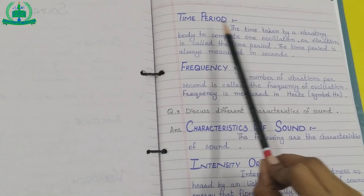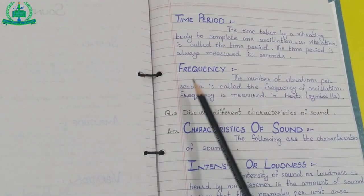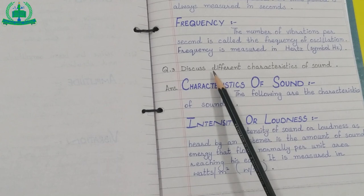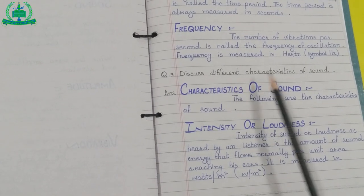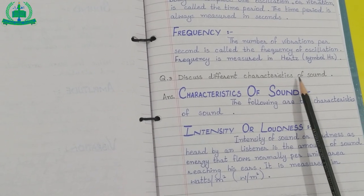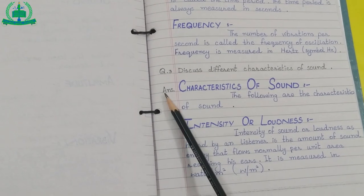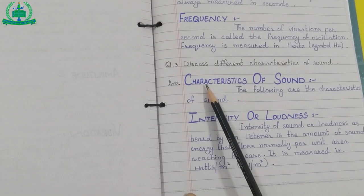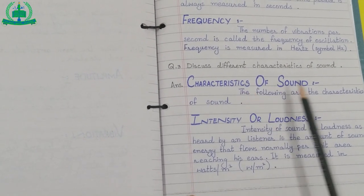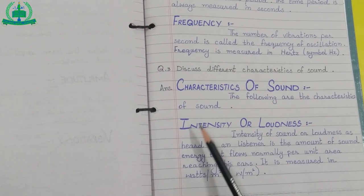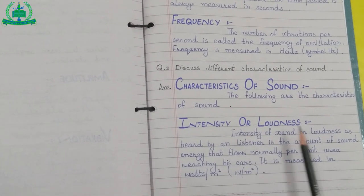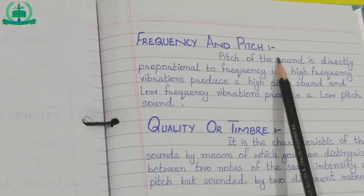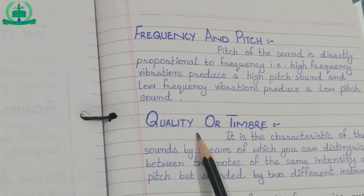Continue headings for question two: time period, frequency. Question number three: discuss different characteristics of sound. Write the heading 'Characteristics of Sound': intensity or loudness, frequency and pitch, quality or timbre.